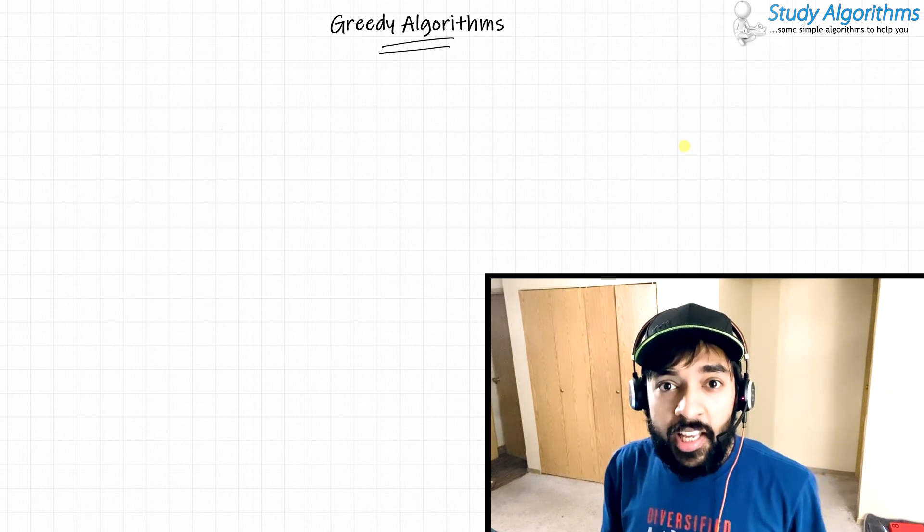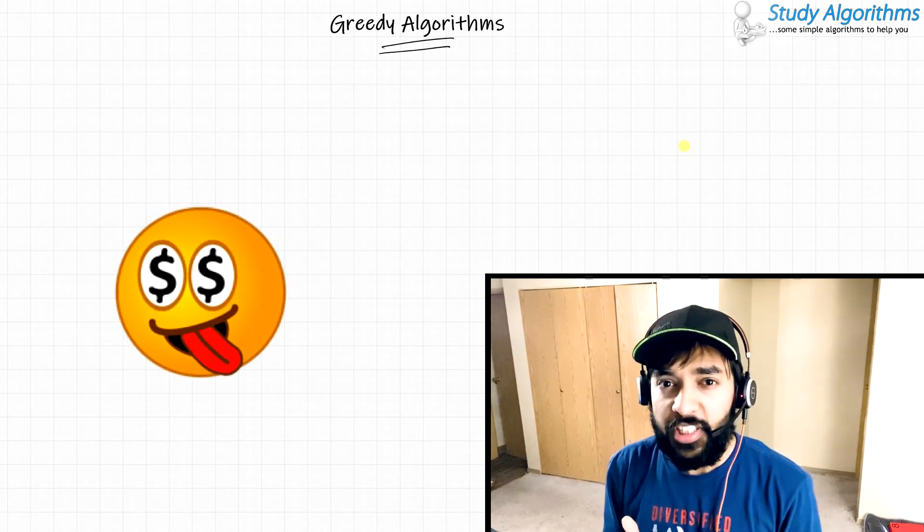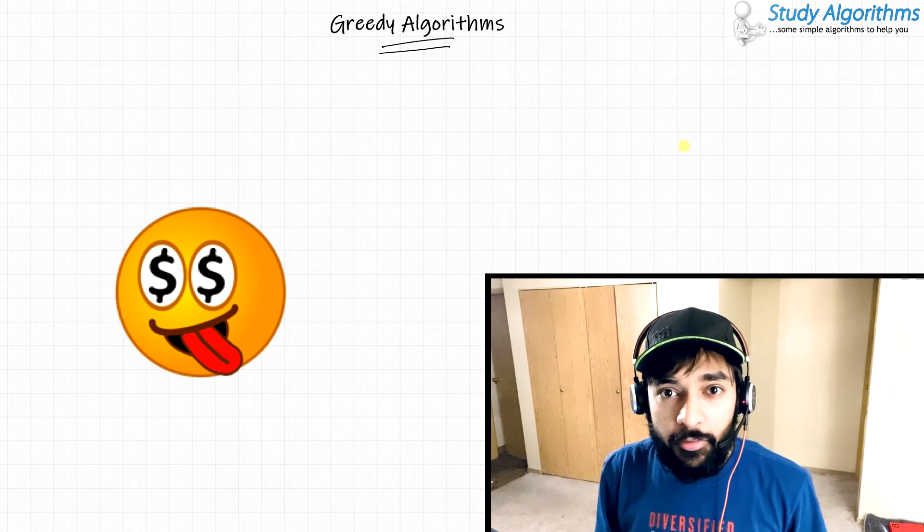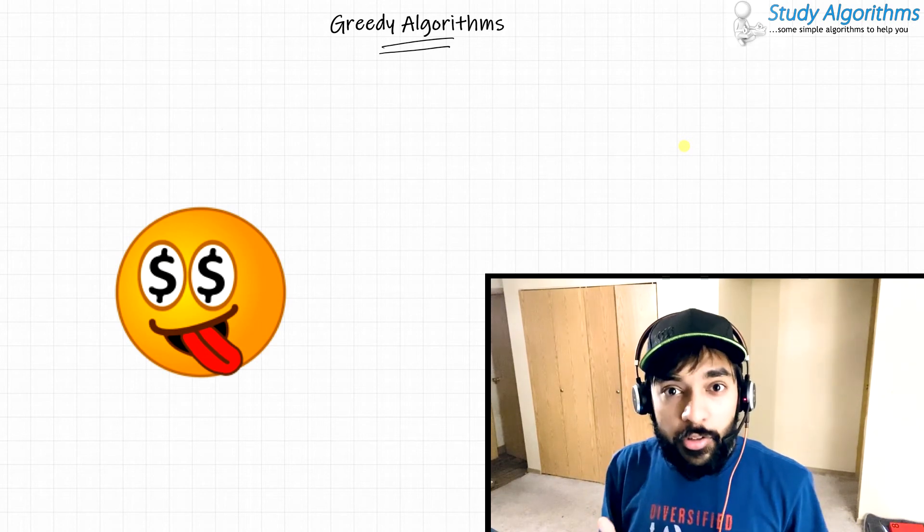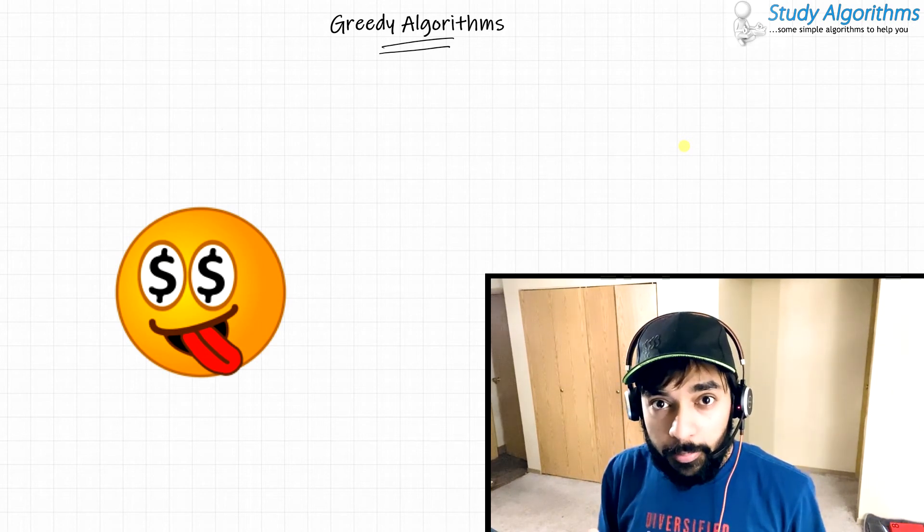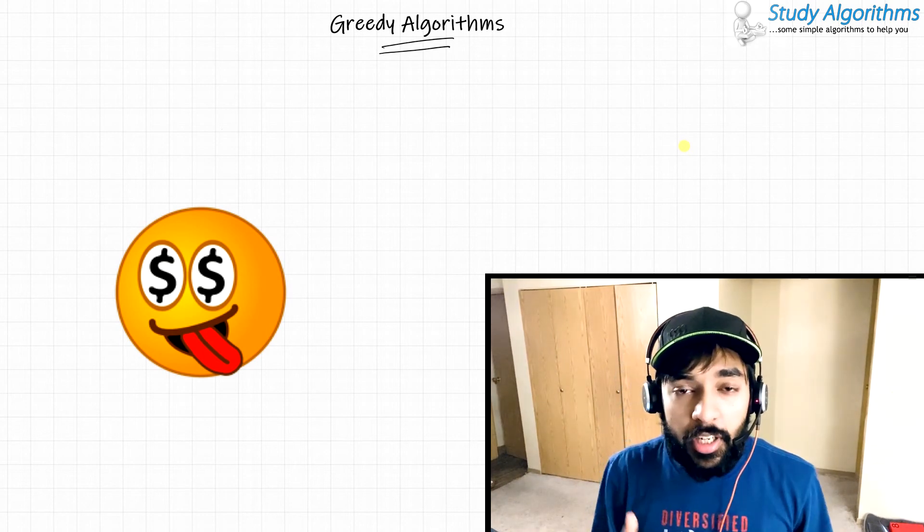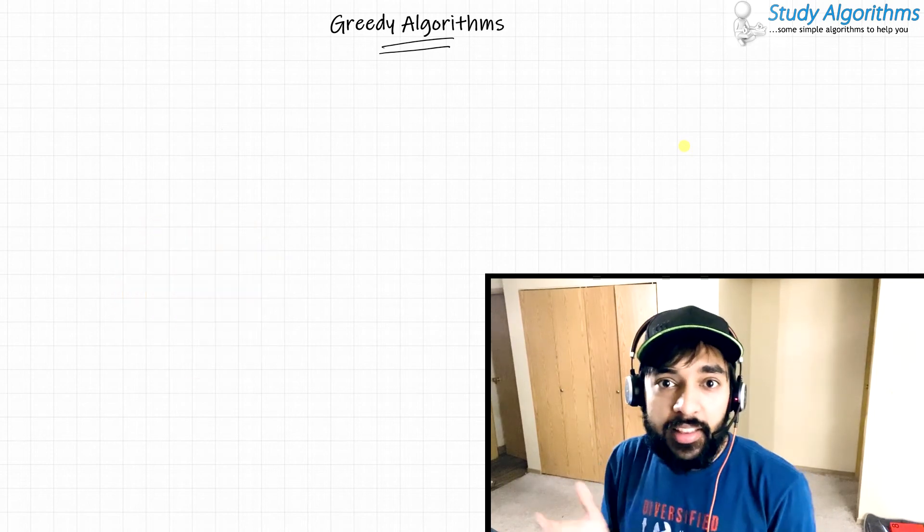In this video specifically we would be talking about greedy algorithms. What do you mean when you say greedy algorithm? The word greedy means choosing the best for yourself. So how can we apply that to algorithms? At each stage while solving the problem, we try to determine what is the best state for us and then we proceed in that direction.